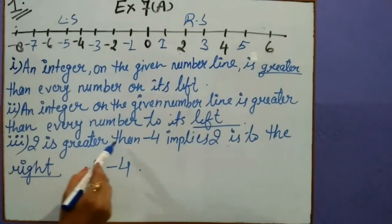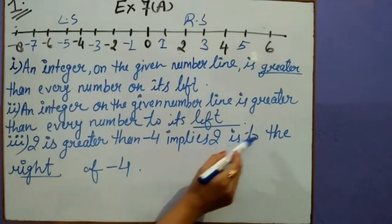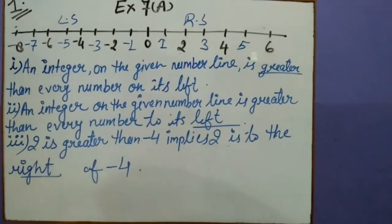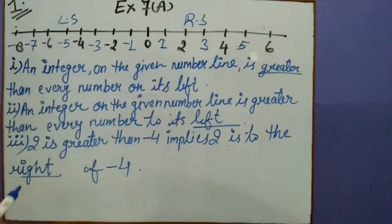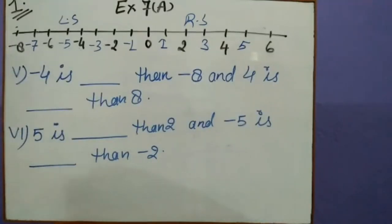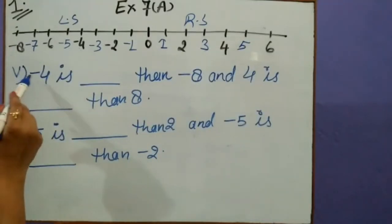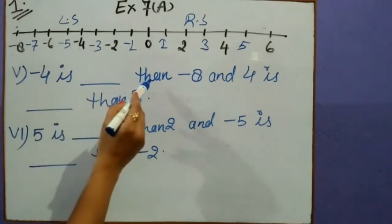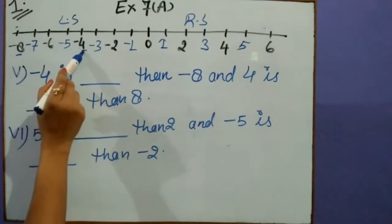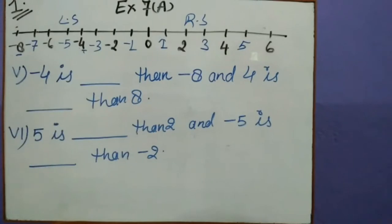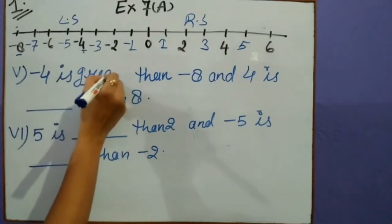2 is greater than minus 4 implies 2 is to the right of minus 4 — 2 is to the right side, that's why we will write here: right. Fifth one: minus 4 is blank than minus 8. Minus 8 is here and minus 4 is here. We can see that minus 4 is greater than minus 8, so we will write here: greater.